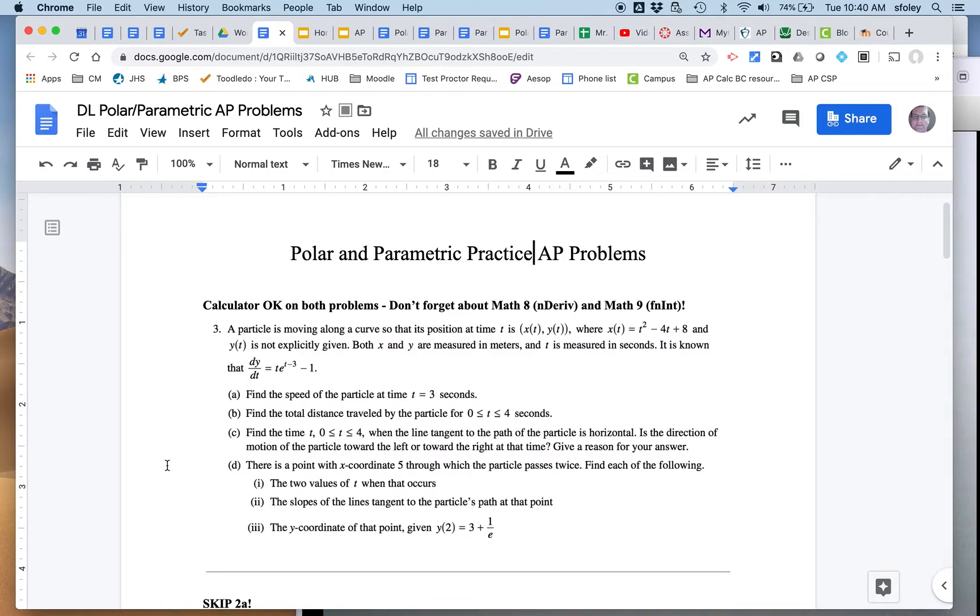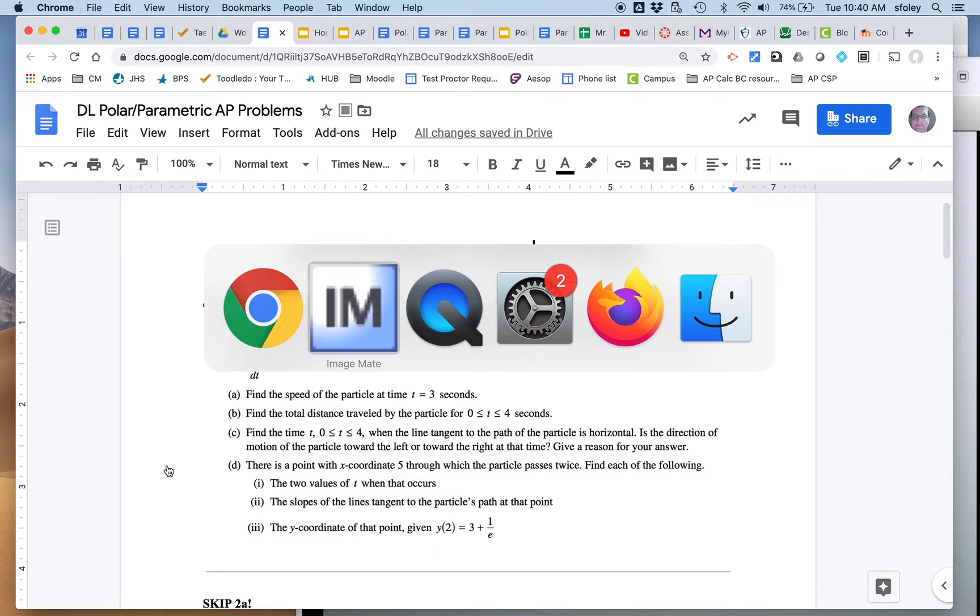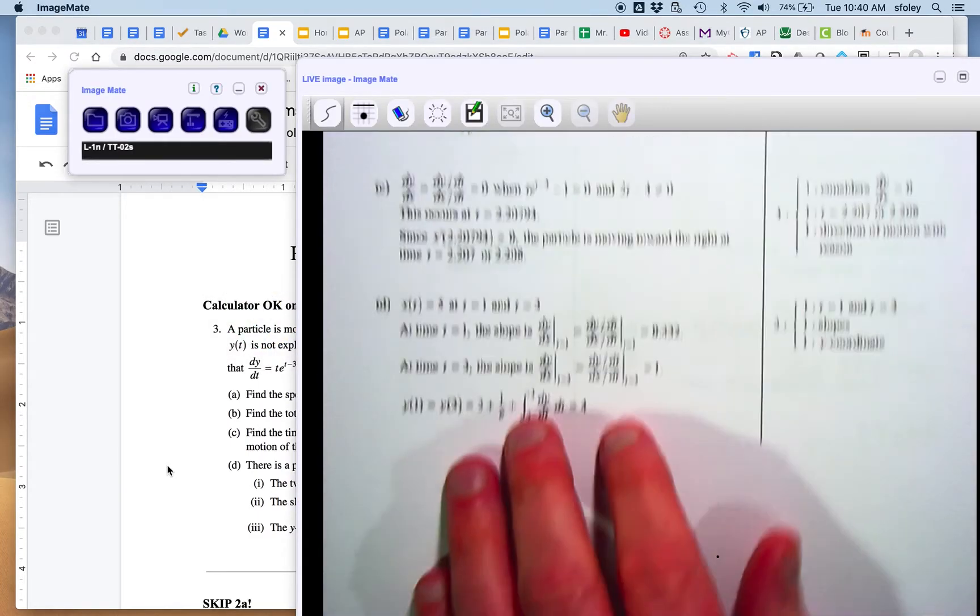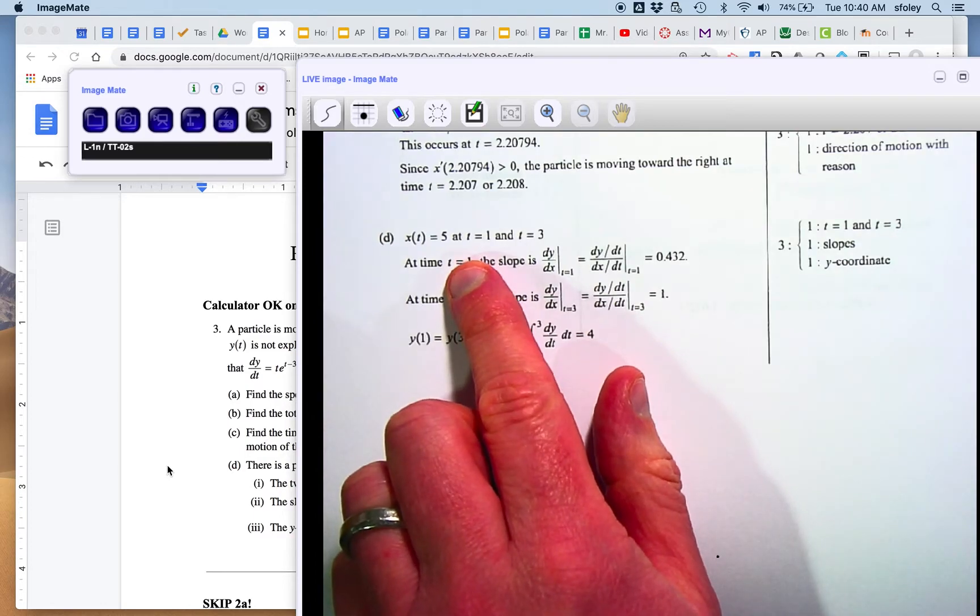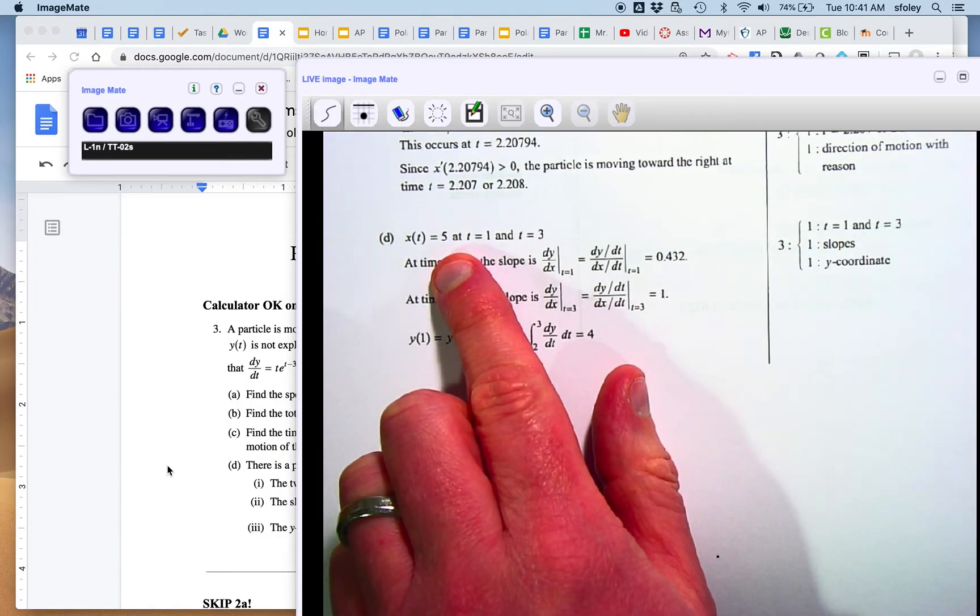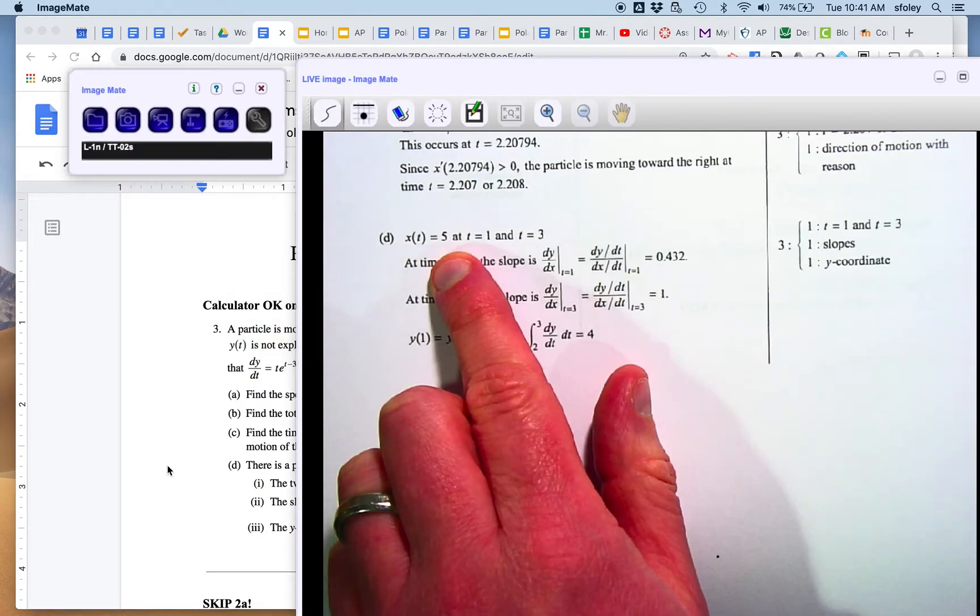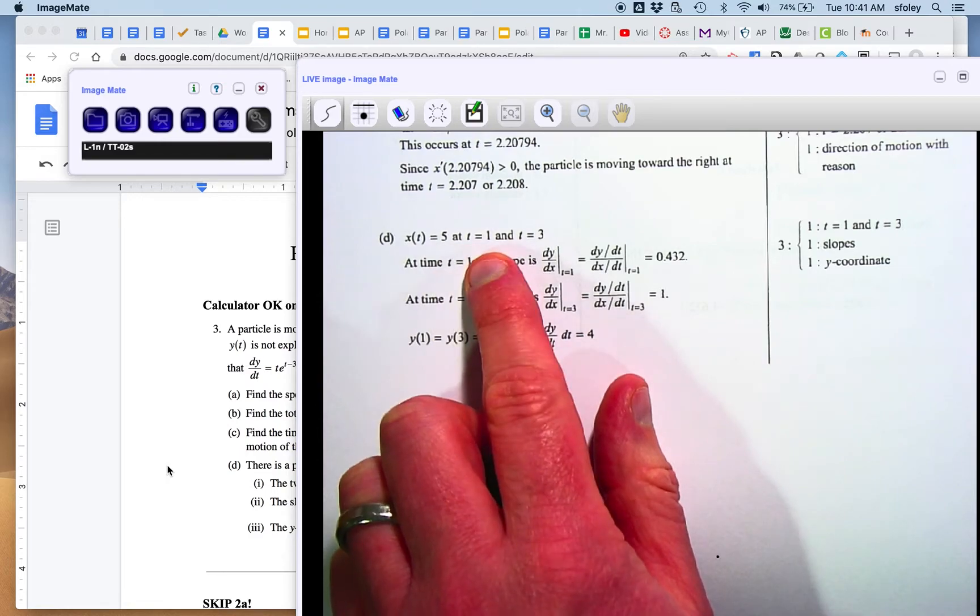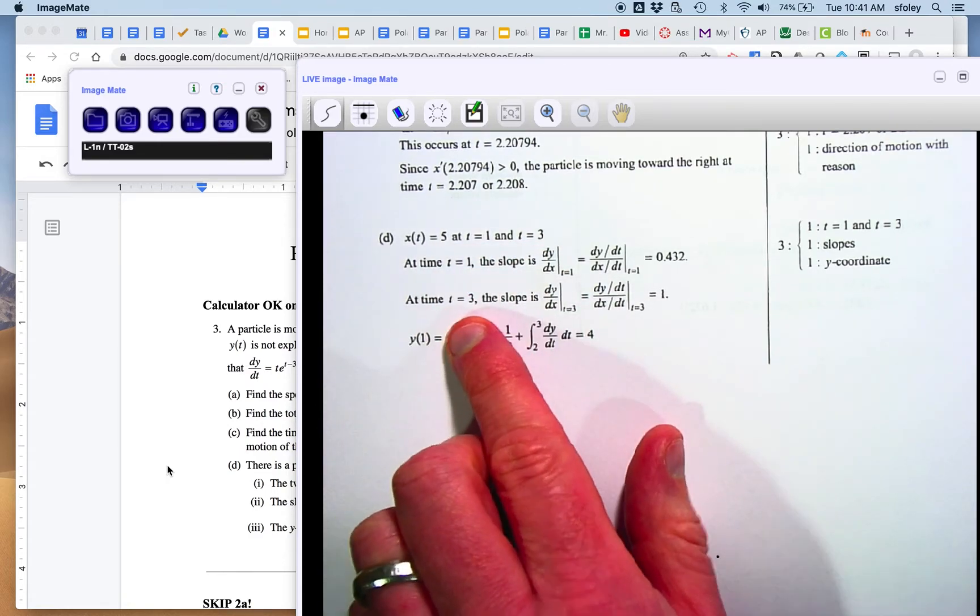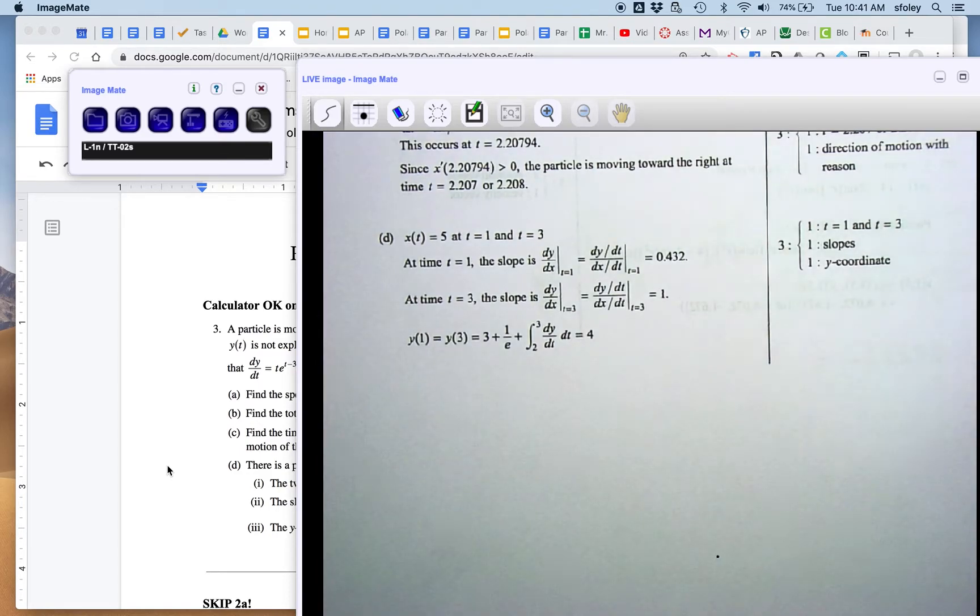D, there is a point with x-coordinate 5 through which the particle passes twice. Find each of the following, the values of time when that happens, the slope, and the y-coordinate. And so a lot going on here, as there often is. So first, how do we find the time when x is 5? You simply take the equation that they gave you, which was a quadratic, set it equal to 5, use your graph or your quadratic formula, get those time values. At time 1 and time 3, you plug those into dy dt and dx dt and get the slopes.